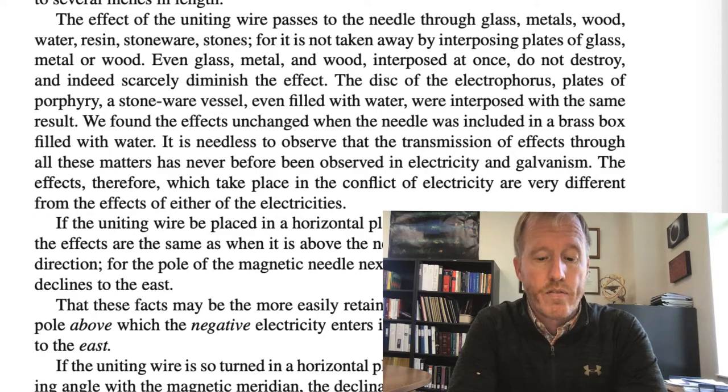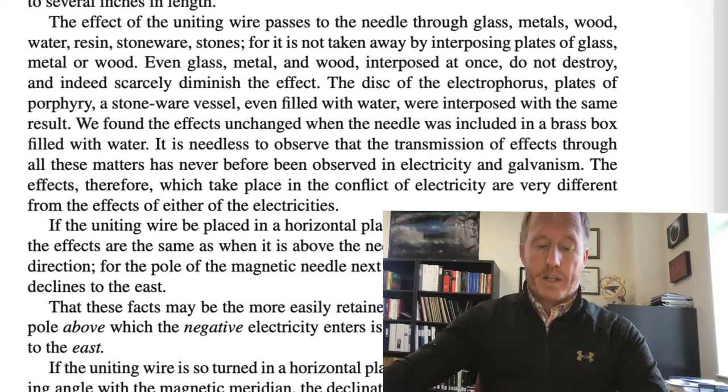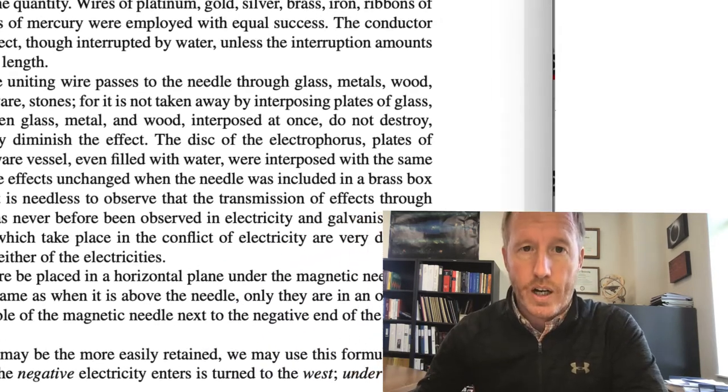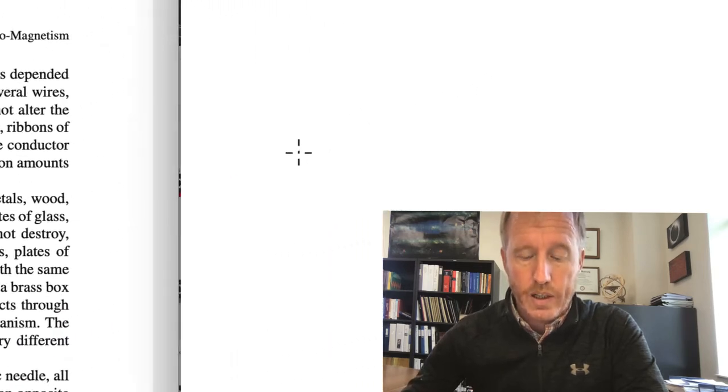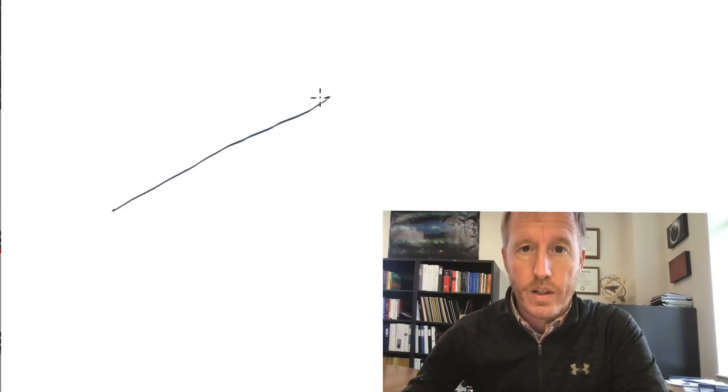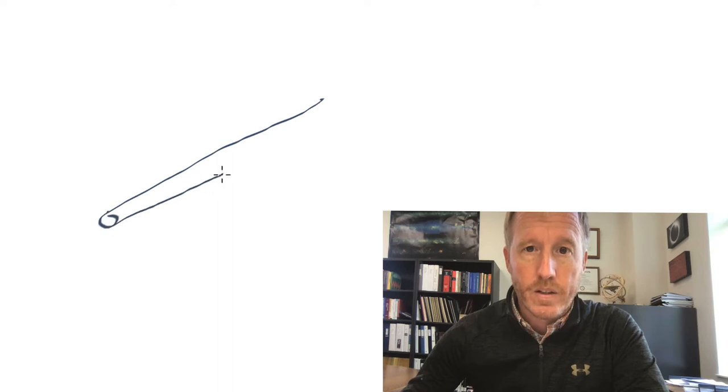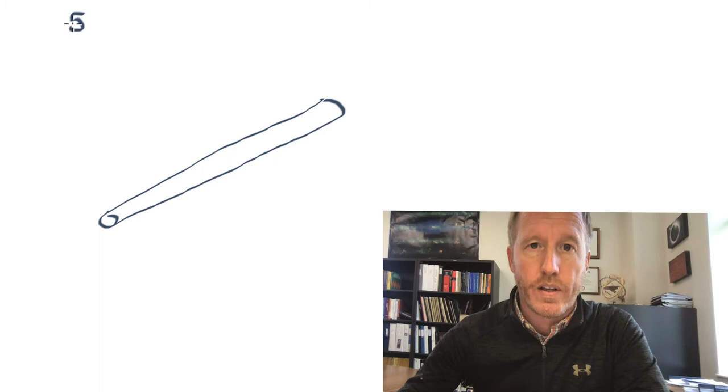Next, he goes on to his fifth experiment. And here, I'll make a sketch. And I won't draw the entire apparatus like I have been doing. Allow me to just draw the uniting wire like this. This is his fifth experiment. This isn't how he numbers them, but I think it's convenient for us to number them.